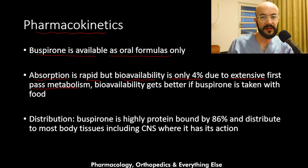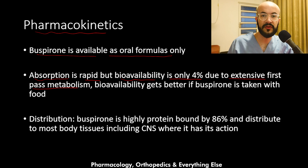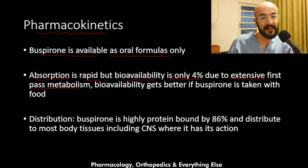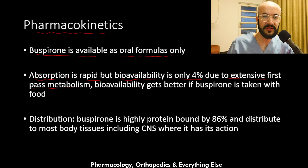When buspirone gets absorbed in the intestine and enters the blood, it goes into the portal vein, where it travels to the liver. In first-pass metabolism, 96% of the buspirone dose will be eliminated, and only 4% will go into the systemic circulation where it has its effects.